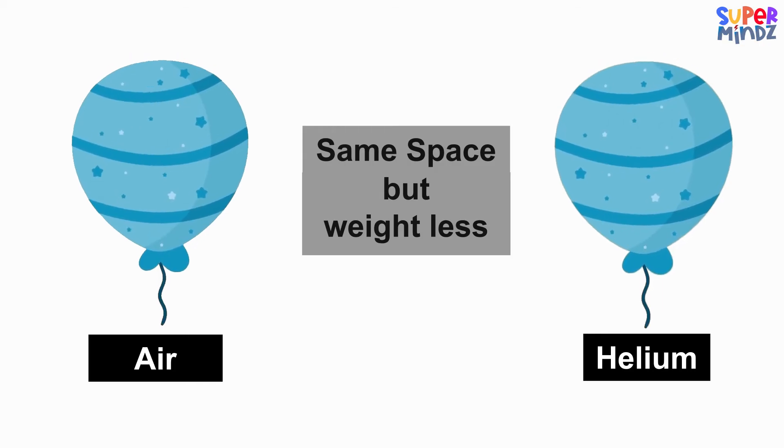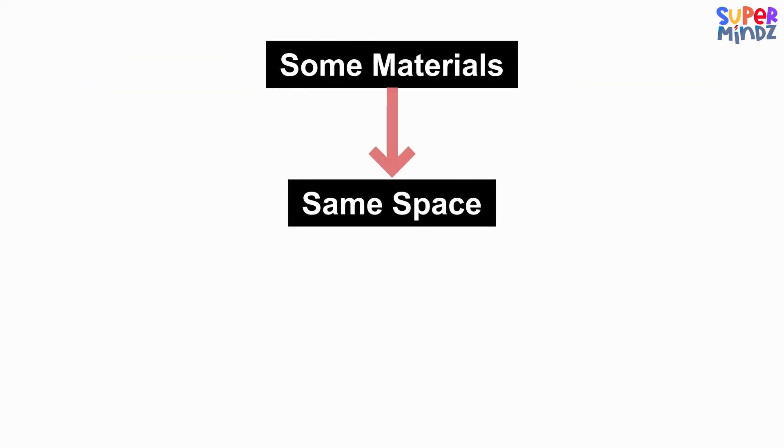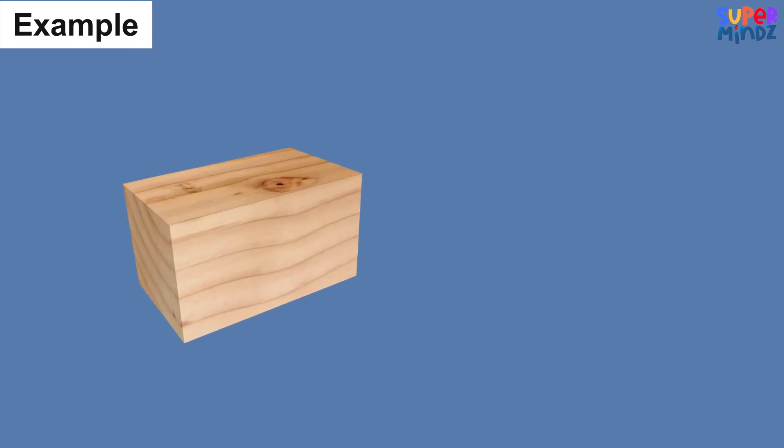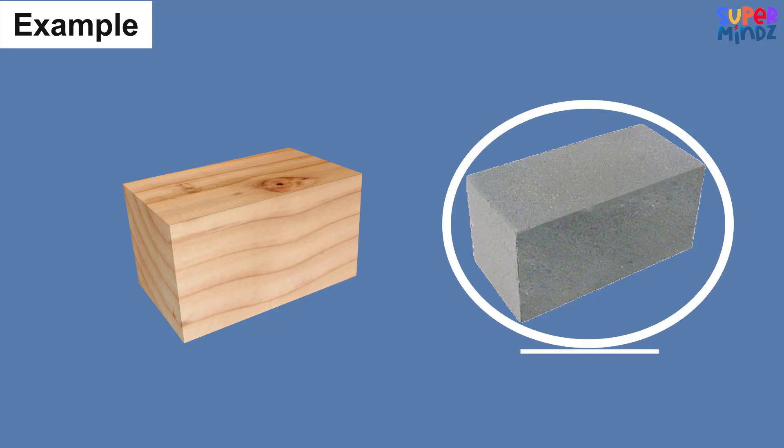Some materials can take up the same amount of space but be heavier or lighter than others. For example, think about a wooden block and a block of iron that are the same size. The iron block is much heavier because iron is denser than wood.